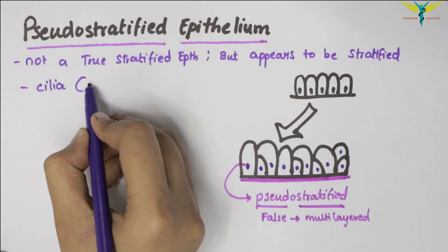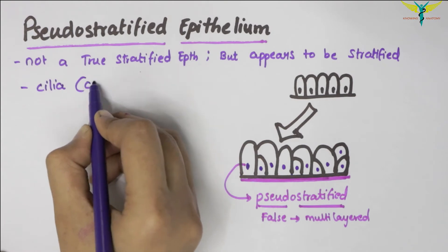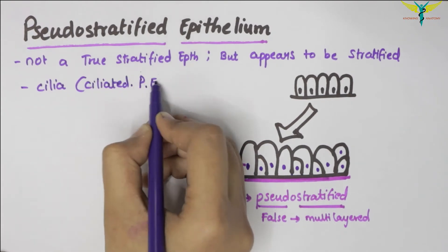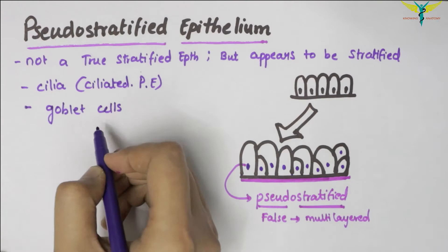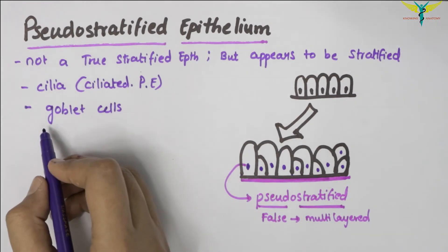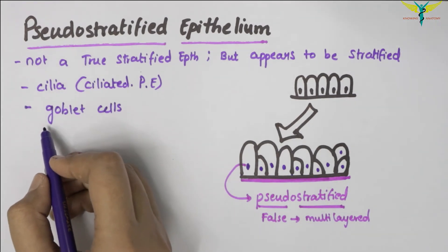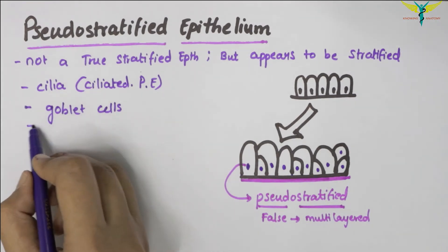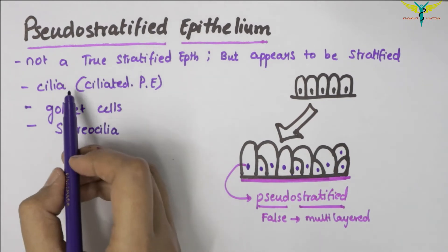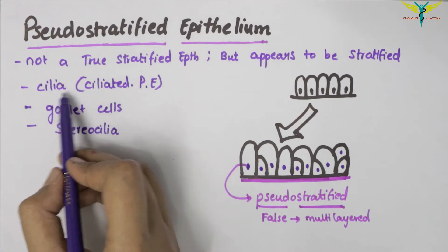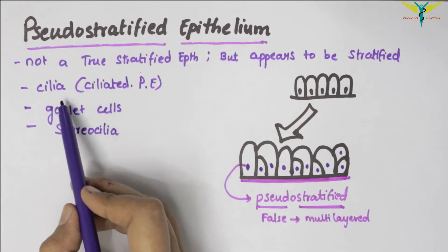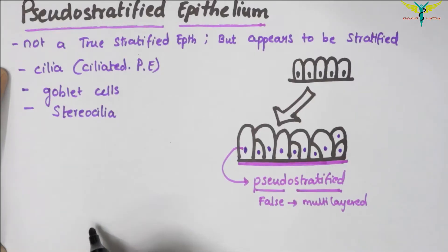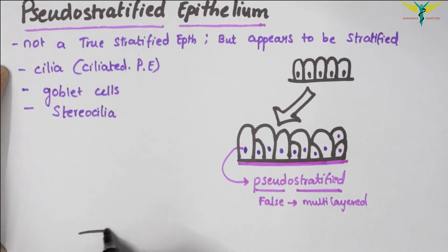Some may contain goblet cells. Sometimes the epithelium may also contain stereocilia. The cilia are capable of movement, which helps in the function of this epithelium. Now I am drawing the pseudo-stratified ciliated columnar epithelium.